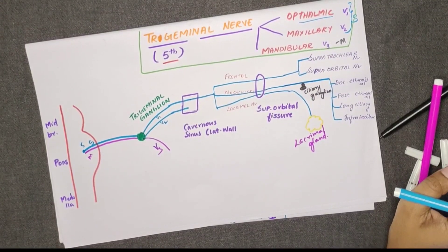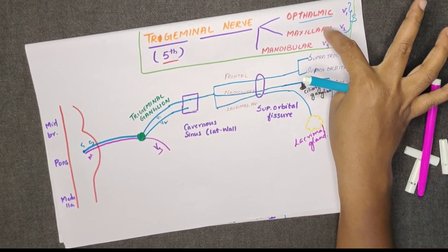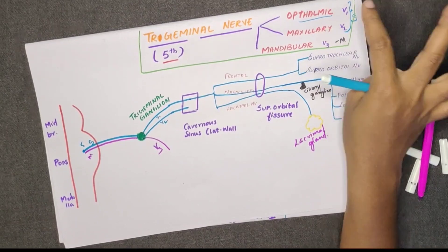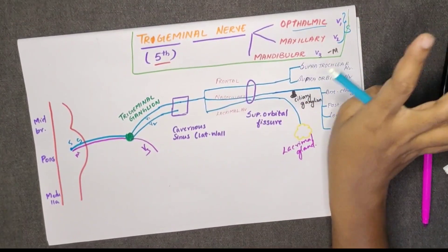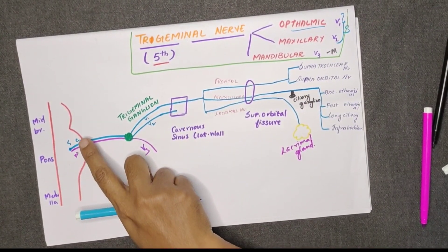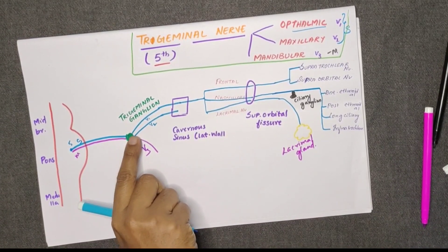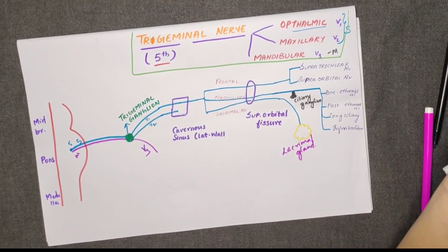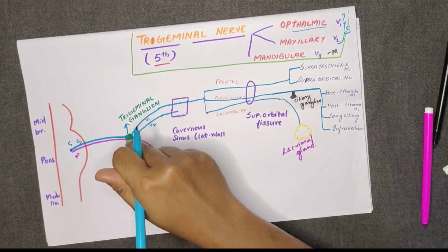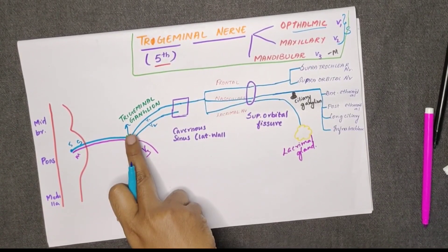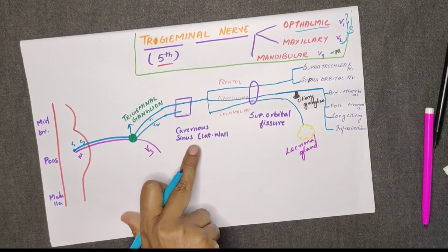To summarize: the trigeminal nerve is the 5th cranial nerve with three branches — ophthalmic, maxillary, and mandibular. The ophthalmic and maxillary are purely sensory; the mandibular is a mixed nerve. The nerve has two roots — sensory and motor — which emerge and join at the trigeminal ganglion. V1 (ophthalmic) and V2 (maxillary) pass through the lateral wall of the cavernous sinus.